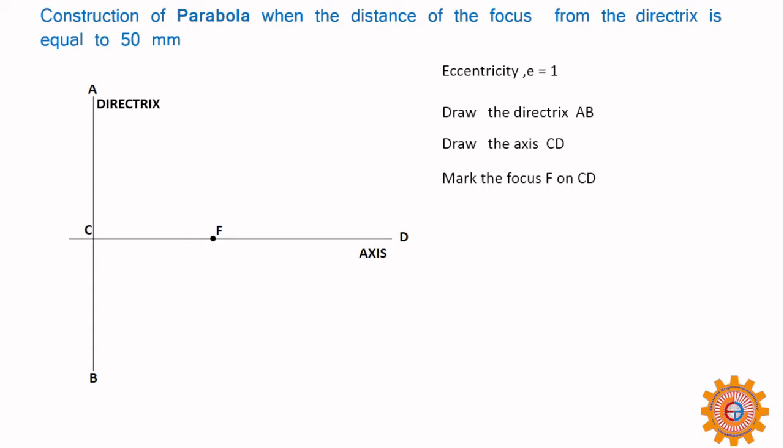You have to divide CF into two equal parts - that is, bisect CF. If possible you can use the bisector method, or simply mark the middle point of CF. That point we call the vertex.